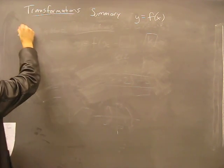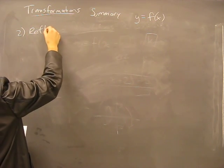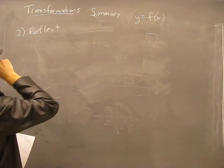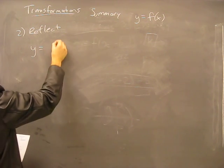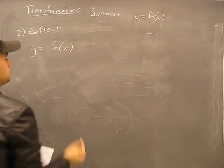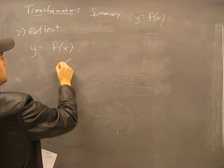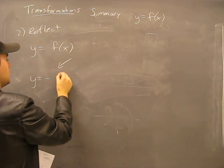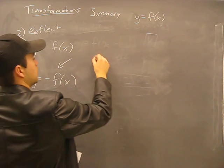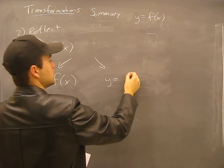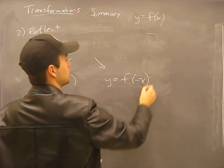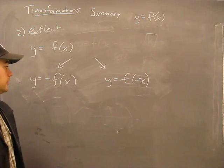The second thing is reflections. Here we have y equals f of x. Drawing a picture always helps. So we know that we can go y equals negative f of x, or y equals f of negative x. Really simple to think about.